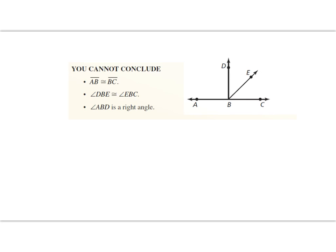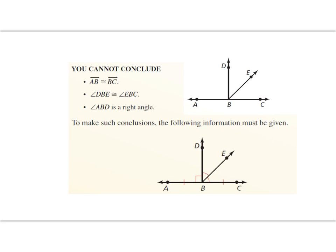Things you cannot conclude from the diagram: you cannot conclude that segment AB is congruent to segment BC — we don't know B is the midpoint. You cannot conclude that angle DBE is congruent to angle EBC — we don't know enough about where ray BE is located to say it's a bisector. You also cannot conclude that angle ABD is a right angle — it may appear to look like one, but without markings or given geometric notations, we cannot make that conclusion.